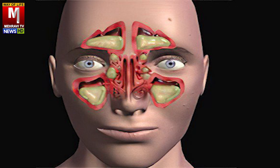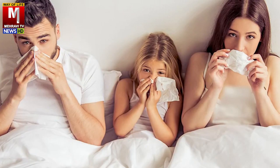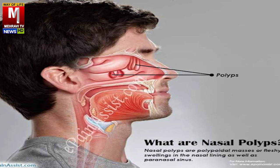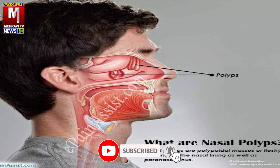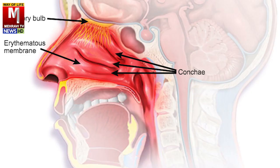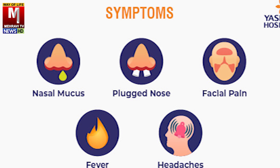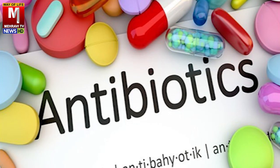اگر تین ہفتے تک وقفے وقفے سے یا مسلسل سائنوسائٹس کی علامات رہیں تو یہ کرونک سائنوسائٹس بن سکتا ہے۔ تیس سال سے زائد عمر کے افراد کرونک سائنوسائٹس کا زیادہ شکار ہوتے ہیں کیونکہ عمر کے ساتھ ناک کے کارٹیلیجز نرم ہوتے جاتے ہیں۔ دانتوں کی انفیکشن سے بھی سائنوسائٹس ہو سکتی ہے۔ تین بار سے زائد رہنے والی سائنوسائٹس کے لیے کچھ ڈاکٹر دو سے چار ہفتے مسلسل اینٹی بائیوٹکس دیتے ہیں جو کہ انتہائی غلط ہے اور جگر، گردے اور آنتوں کے مسائل پیدا کر سکتا ہے۔